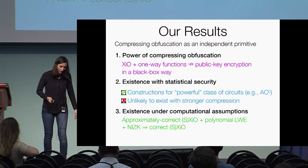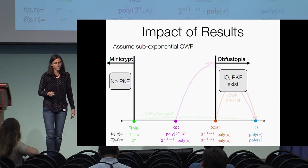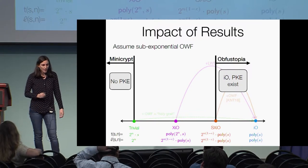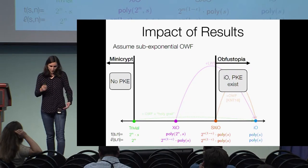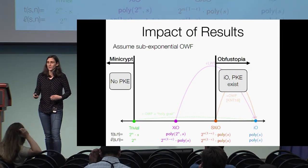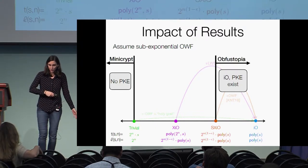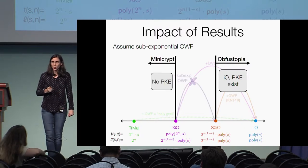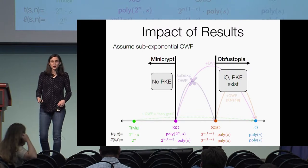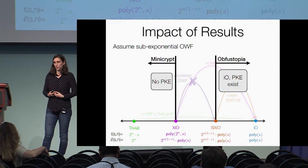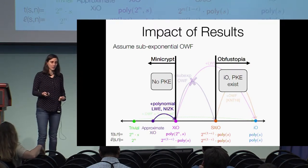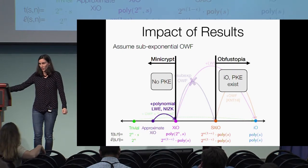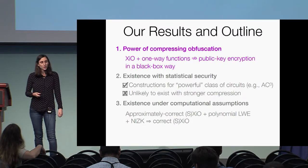Looking at the impact of our results: the first result — that XIO doesn't imply public key encryption — also implies that XIO doesn't imply IO, and also implies that XIO doesn't imply SXIO, because SXIO does imply public key encryption in a model that fits our black box model. Therefore, this result shows that assuming XIO and one-way functions, we still only have MiniCrypt. Thus, we've simultaneously made the gap in our knowledge smaller and also weakened the assumptions underlying IO. Moreover, we further weakened these with our correctness amplification, showing that you only need a very approximate version of XIO to get with standard assumptions all the way to IO.